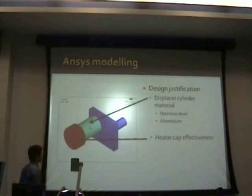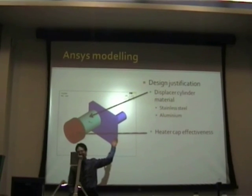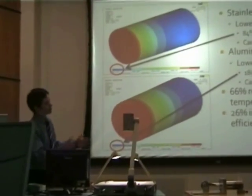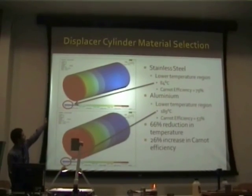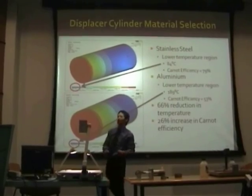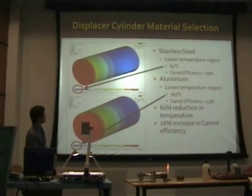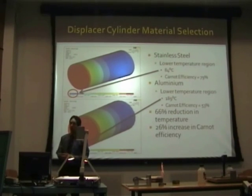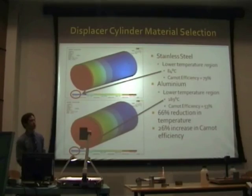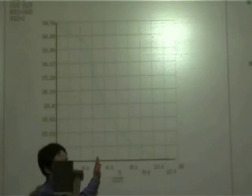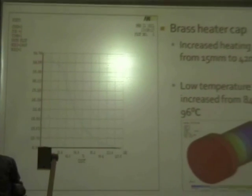Using ANSYS, I justified my design by comparing displacer cylinder materials — stainless steel versus aluminium. Applying a 400°C uniform temperature at the high temperature end, stainless steel reached 84°C at the low temperature region, equating to a Carnot efficiency of 79%. With aluminium under the same conditions, the low temperature region reached 189°C — a Carnot efficiency of only 53%, which is a 26% reduction. The heater cap analysis showed it can potentially increase heat length from 15 mm to 42 mm, though it does increase the lower temperature region from 84 to 96°C.